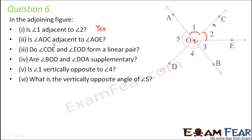Is angle AOC adjacent to angle AOE? AOC is angle 1 and AOE is this total angle. Are these two adjacent? No, they are not. Because they have a common vertex — true. They also have a common arm — true. But they share common interior points, because this region is common to both angle AOE and angle AOC. So they have common interior points, therefore angle AOC is not adjacent to angle AOE.